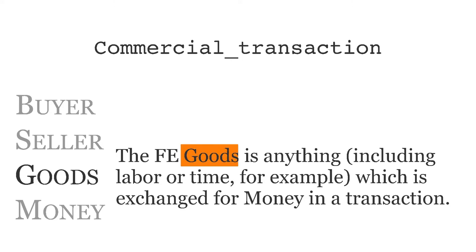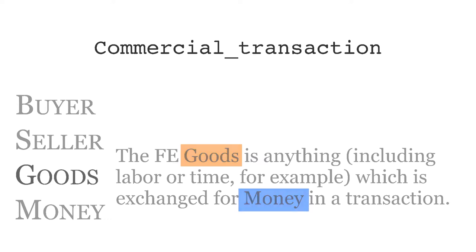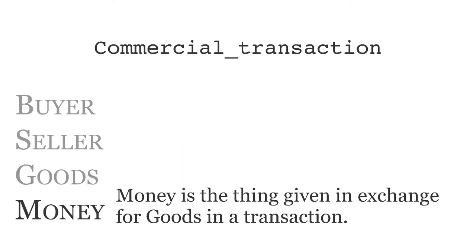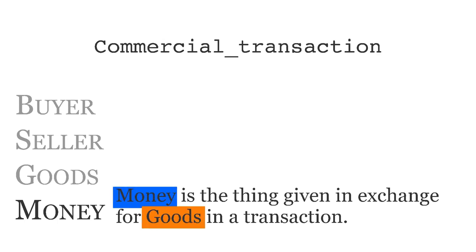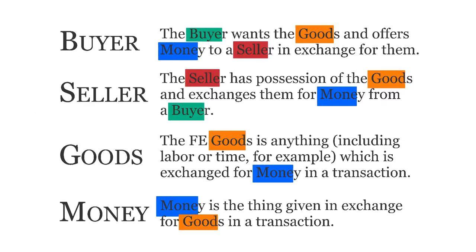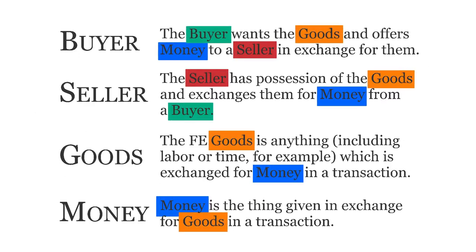Goods: the frame element goods is anything, including labor or time, for example, which is exchanged for money in a transaction. Money: money is the thing given in exchange for goods in a transaction. The way frame elements are defined is key when it comes to analyzing whether a given lexical unit belongs to the frame or not.